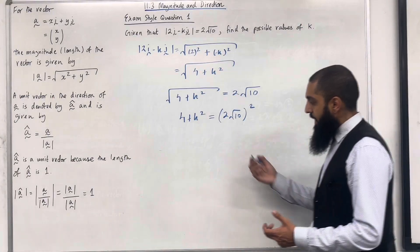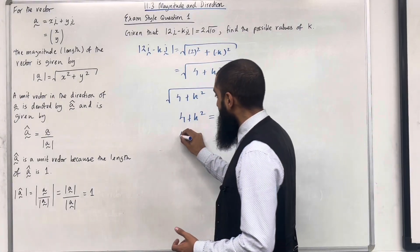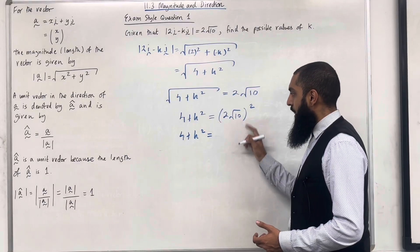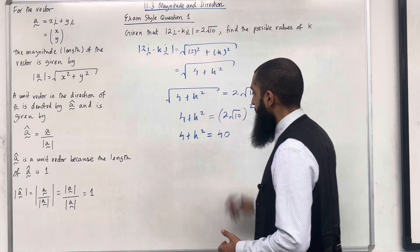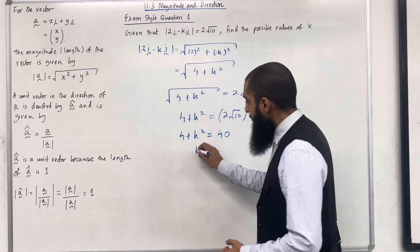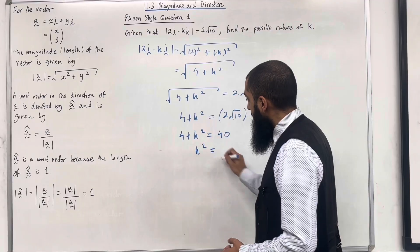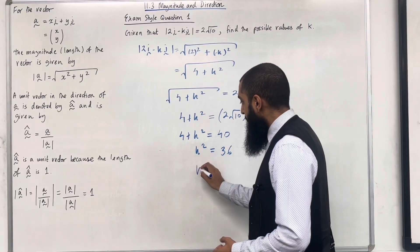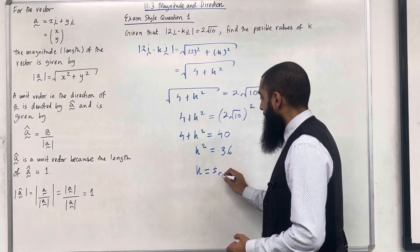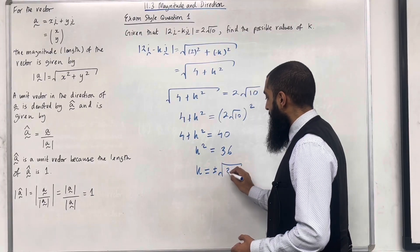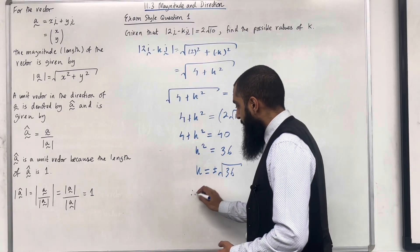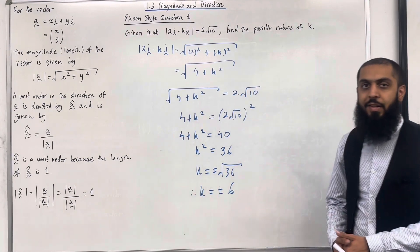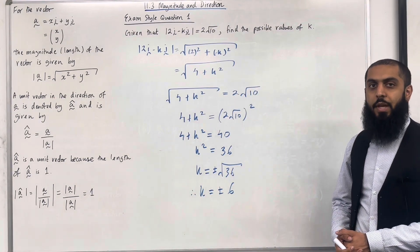The left-hand side is 4 + K². The right-hand side is 40. So K² = 40 − 4 = 36. Hence K = ±√36. Therefore K = ±6. This completes exam style question 1.